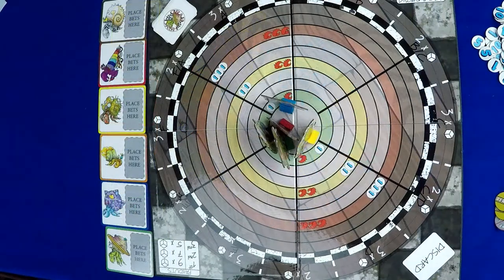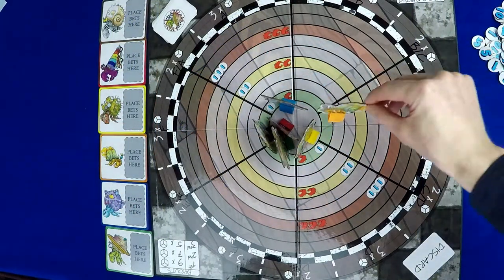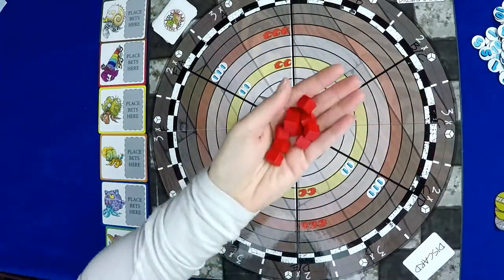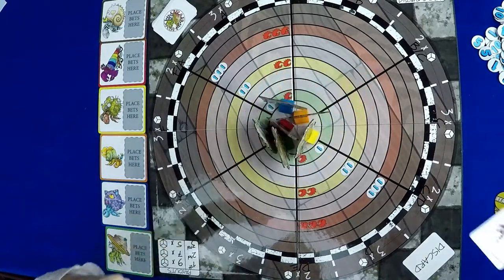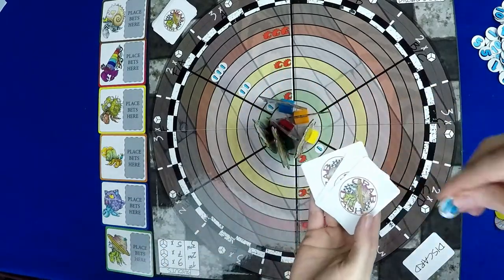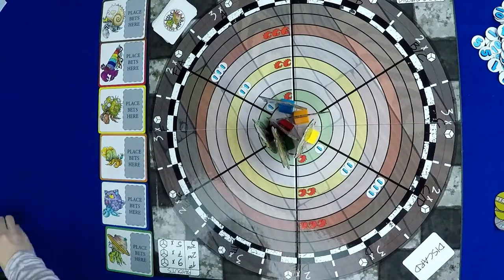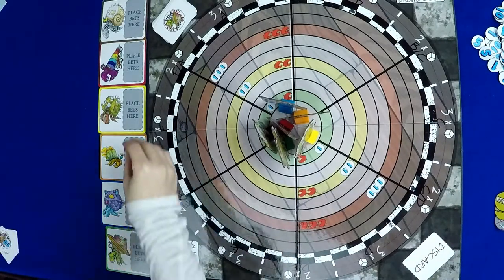To begin, the crabs are all placed in the center circle. Players receive a number of betting cubes based on player count, some action cards, and pearls to start the game with. Players will also place two initial bets on the crab betting cards.